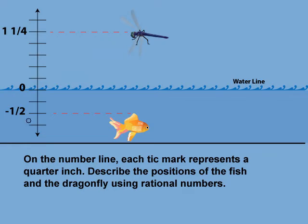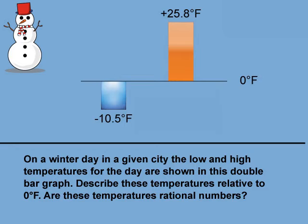Let's look at a final example. On a winter day in a given city, the low and high temperatures for the day are shown in this double bar graph. Describe these temperatures relative to zero degrees Fahrenheit. Are these temperatures rational numbers? Another way to express rational numbers is as decimals. The data shown in this graph shows values to the tenths place. However, not all values written in decimal form are rational numbers — for example, pi is not a rational number.